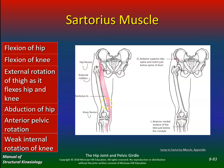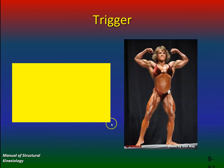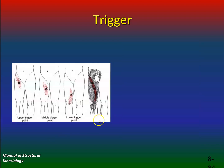Sartorius muscle: flexion of the hip, flexion of the knee, external rotation, abduction, and anterior pelvic rotation. You can get all sorts of trigger point pain — right in the mid-thigh or along the side.